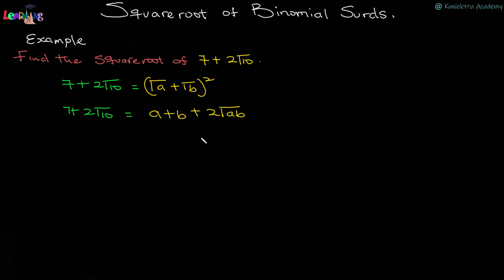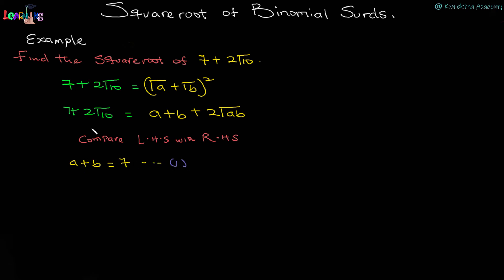Now, 7 + 2√10 equals a + b + 2√(ab). With this, we can compare the left-hand side and right-hand side. The rational number on the left is 7, and the surd value is 2√10. Comparing: a + b = 7 — call this equation 1. And since 2√10 equals 2√(ab), cancelling the 2 gives ab = 10 — call this equation 2.